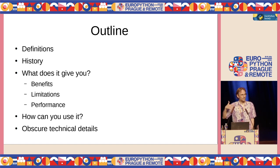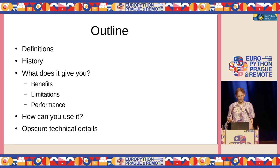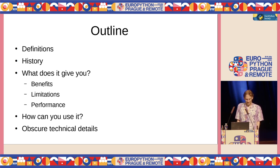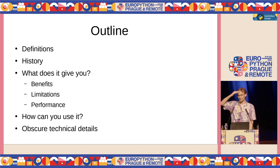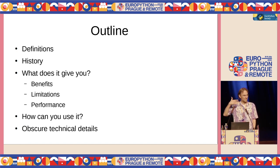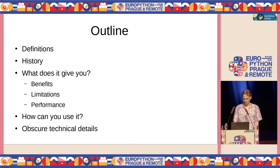Then there are about three or four slides of actually useful information that you can practically use about how you use it. At the end, I've got an unlimited amount of obscure technical details. This is the stuff that interests me but doesn't interest the rest of you, because you don't come to a Python conference to hear about C and low-level C code. I'll cover as much as I can and try to leave time for questions, but we may not get through all the technical details.